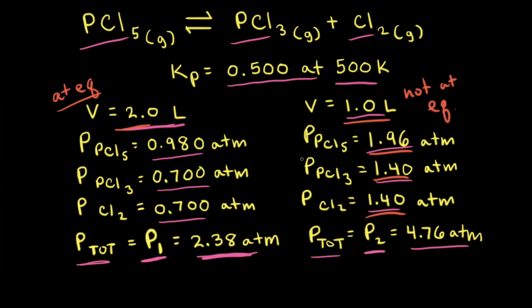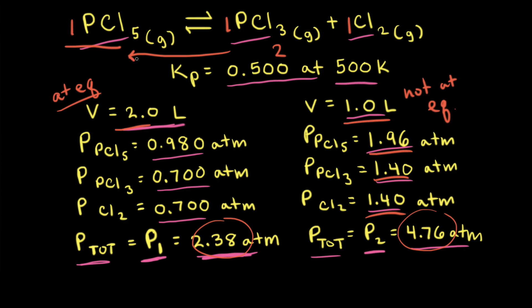Le Chatelier's principle says the net reaction will move in the direction that decreases the stress. Since the stress is an increase in pressure, the net reaction will move to decrease the pressure. There is one mole of gas on the reactant side and two moles on the product side, so the net reaction shifts to the left — toward the side with fewer moles of gas — which decreases the pressure and relieves the stress.